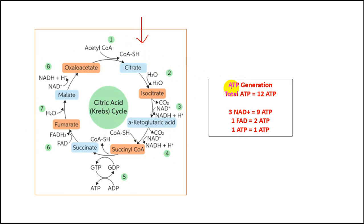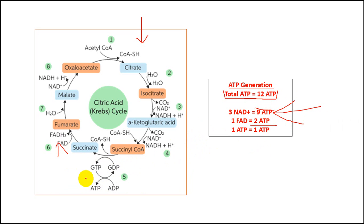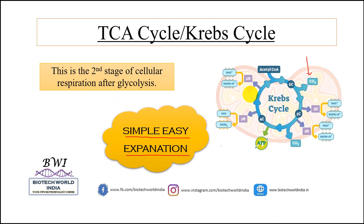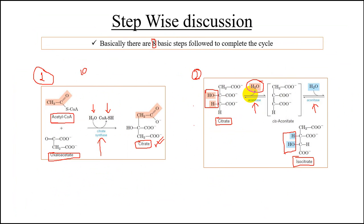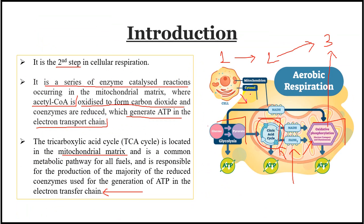Regarding ATP generation: the total ATP generated per turn of the TCA cycle is 12 ATP. This comes from 3 NAD⁺ giving 9 ATP (3 ATP each), 1 FADH₂ giving 2 ATP, and 1 GTP giving 1 ATP. This completes the second stage of cellular respiration; the third stage, oxidative phosphorylation, will be covered in the next video.